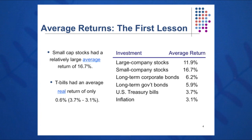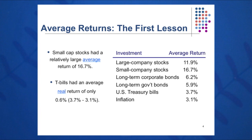For large company stocks, we see an average return of 11.9%. For small company stocks, 16.7%. For bonds of all sorts, about 6%. Long-term corporate bonds, 6.2%. Long-term government bonds, about 5.9% on average over the last 85 years. Treasury bills averaged 3.7% over the last 85 years, and inflation, 3.1%.